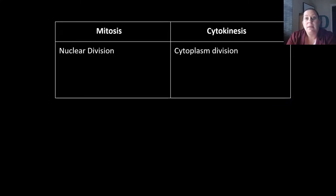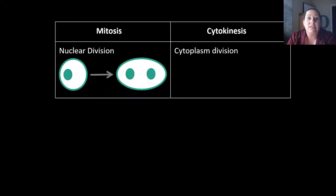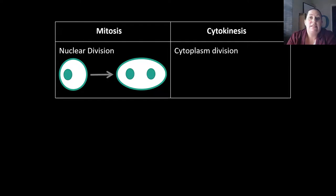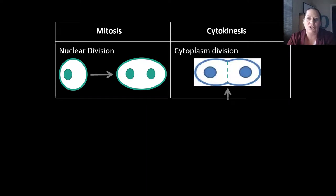Let's talk about some terms with mitosis and cytokinesis. The term mitosis actually means nuclear division — this is where a cell divides its nucleus and divides its DNA up. However, we don't just need one cell with two nuclei; we want the cell to also divide. So cytokinesis is where the cytoplasm actually divides into two. Mitosis and cytokinesis go hand in hand together in this process.